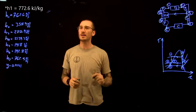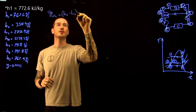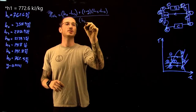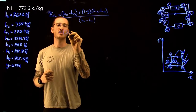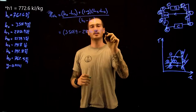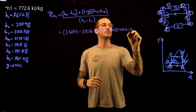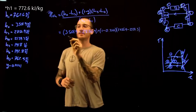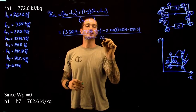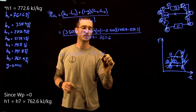Now that we have all the information we need, we can solve for thermal efficiency. Thermal efficiency equals (H2 - H3) + (1 - Y)(H3 - H4), divided by (H2 - H1). This gives us (3501.9 - 2856.9) + (1 - 0.2141)(2856.9 - 2139.3), divided by (3501.9 - 762.6). Our thermal efficiency is 0.4413, or 44.13%.